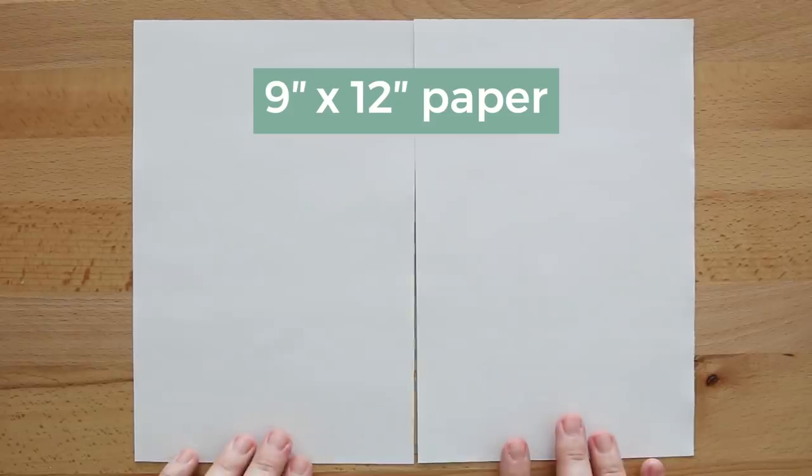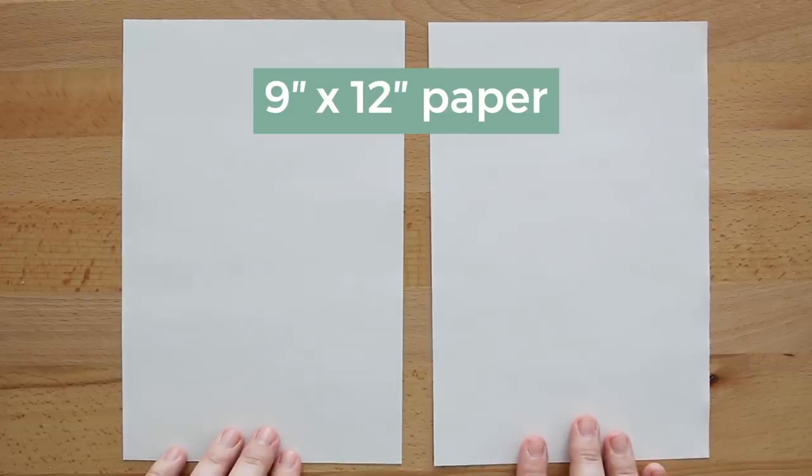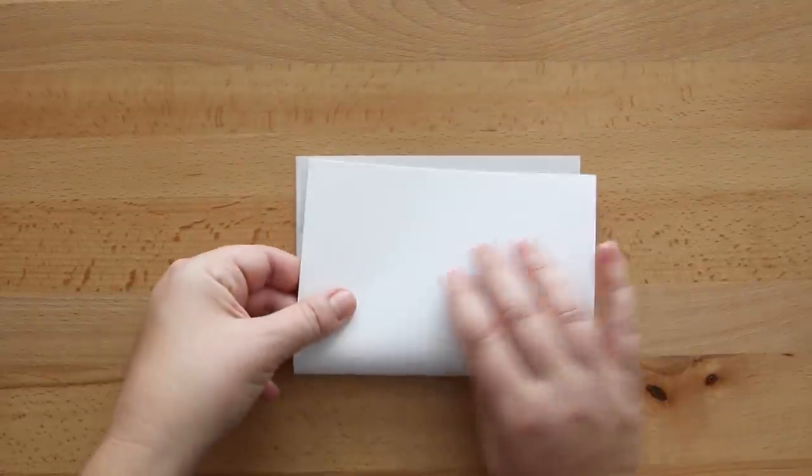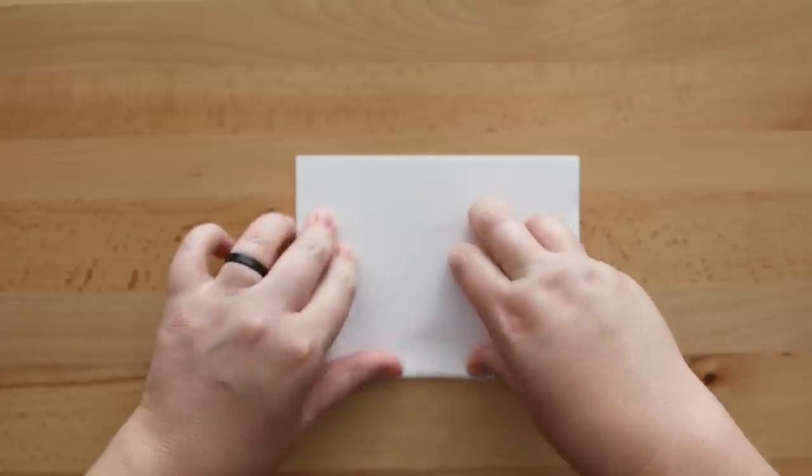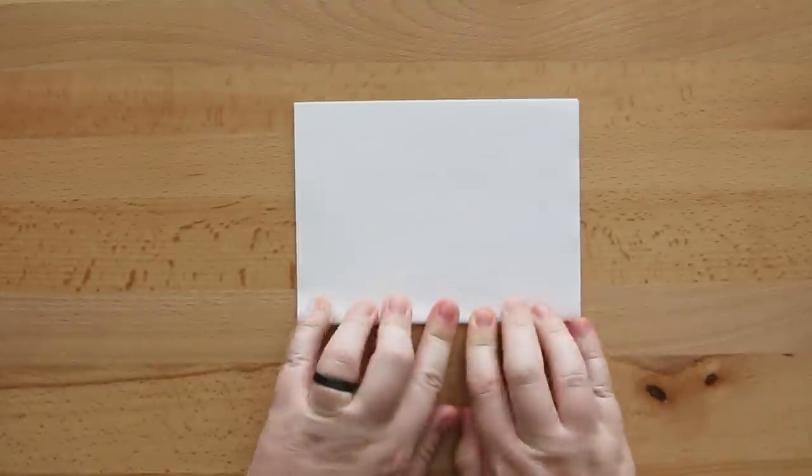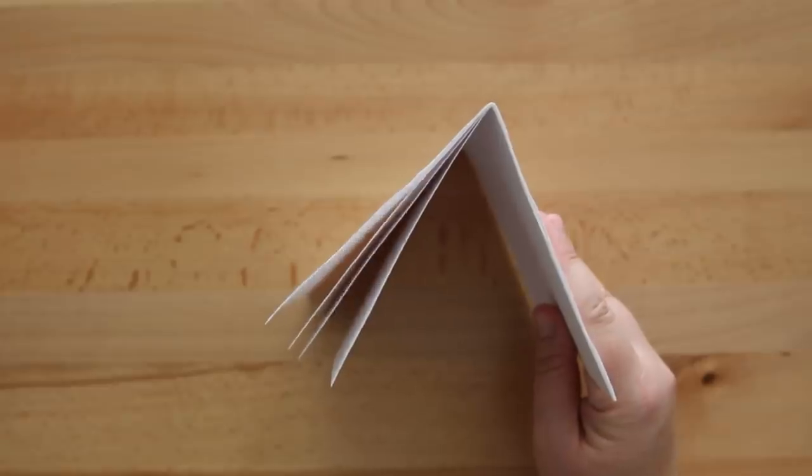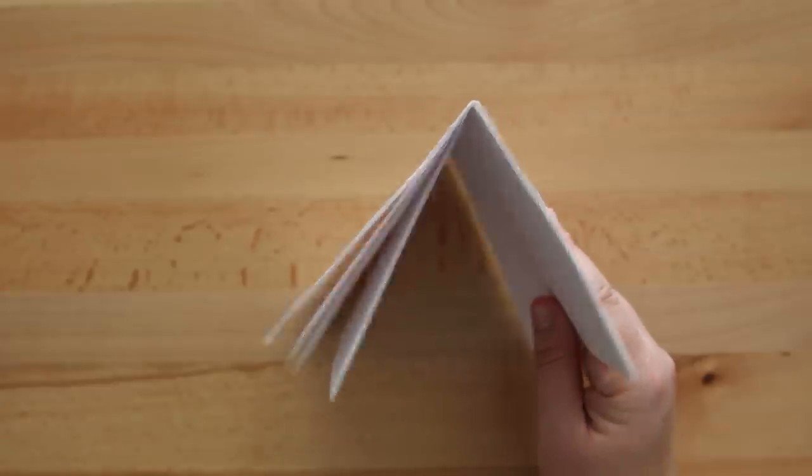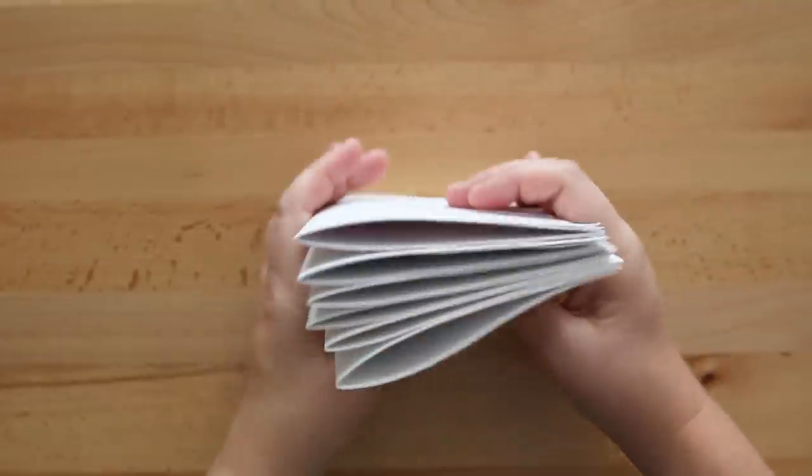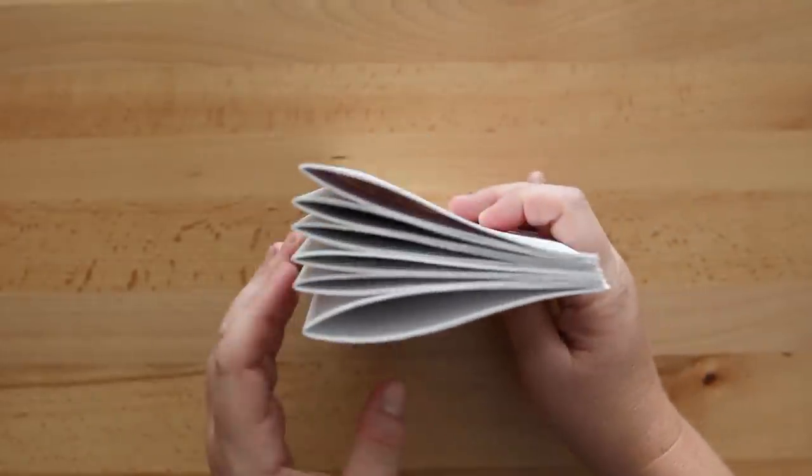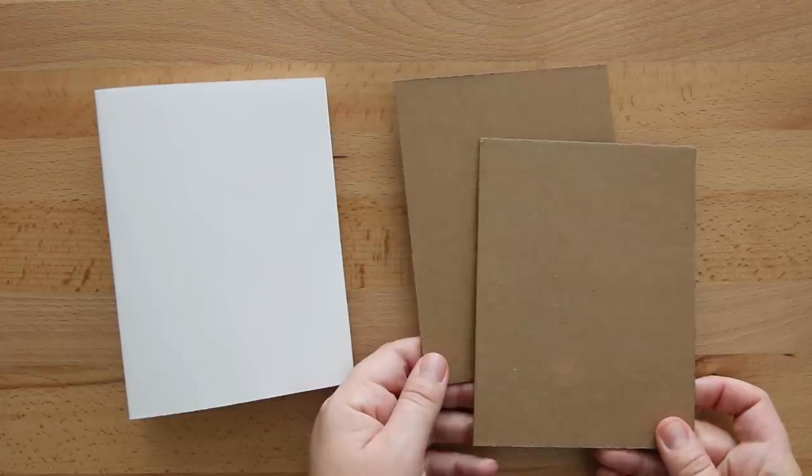For the larger book, I cut 9 by 12 inch paper in half and gathered four of these divided sheets together so I can fold them in half to make a signature. If you didn't know what a signature is, it's basically this. You can use two sheets, three sheets if you want. I like to use four, as long as they are folded and stacked one on top of the other. I repeated this to make seven signatures total and my page size was four and a half by six inches.